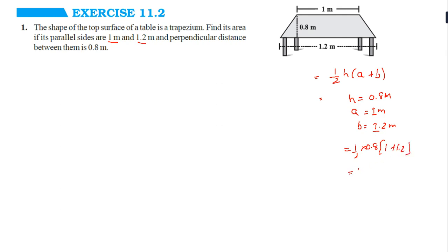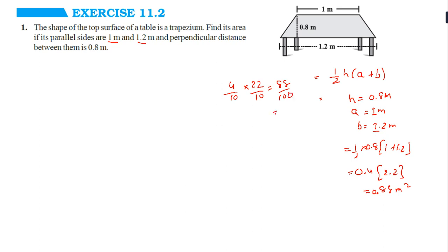So 0.4 into 2.2 gives 0.88. That is 4 divided by 10 and 22 divided by 10, so 88 upon 100. The answer is 0.88 meter square.